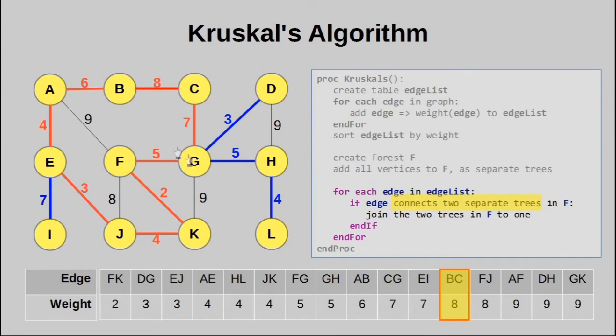Let's actually, just for interest's sake, go through the rest of the edges and see if they create cycles. As you can see, FJ does create a cycle here. AF creates a cycle here.